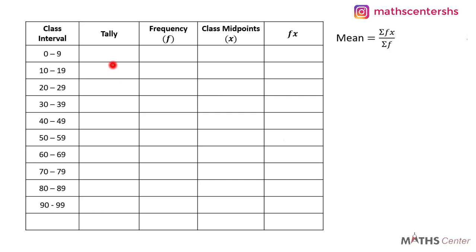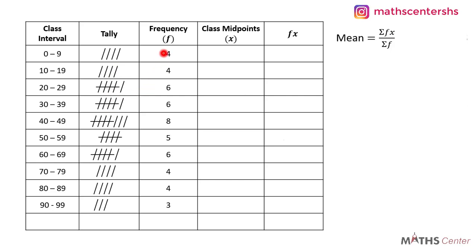When you do the tally for the data, these are the frequencies you will get. I have already explained how to do this in the previous video, so I'm sure you know how to do that. Let's go ahead and find the x values — the class midpoints. To get them we add the lower class limit to the upper class limit and divide the result by 2.